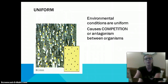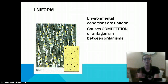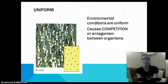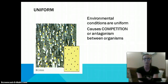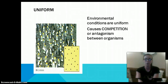Uniform dispersion is when organisms are dispersed pretty evenly throughout a population. This is when environmental conditions are uniform within the habitat that they live. And this is going to cause competition or antagonism between the organisms living there, so they are going to compete for the same resources.